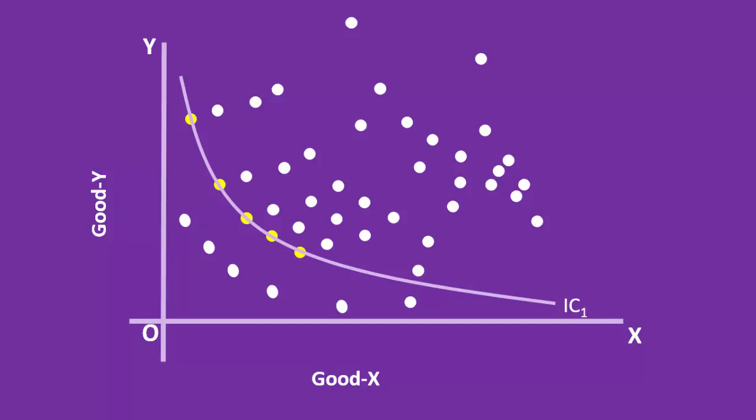All the combinations on this IC curve are equally acceptable to the consumer. It means, consumer is indifferent among these combinations. This is what we mean by indifference hypothesis.